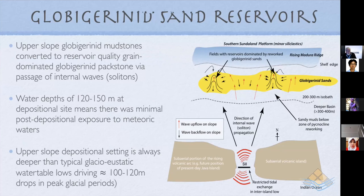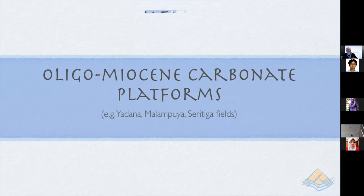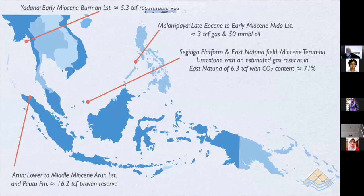Now let's move on and look at the Oligomyocene carbonate platforms. Examples include Yadna, Malampaya, Segatiga, and Arun in Indonesia — all examples of Oligomyocene carbonate bedded platform systems. In terms of reserves: Yadna holds something like 5.3 TCF of gas; Malampaya held something like 3 TCF of gas and around 50 million barrels of oil; Arun something like 16.2 TCF; and Segatiga, yet to go into production due to high CO2 levels, probably holds around 6.3 TCF.